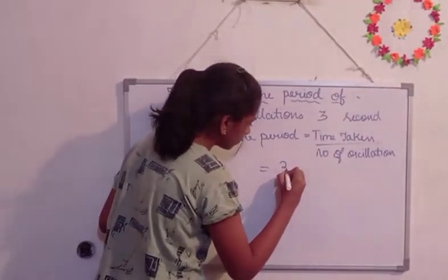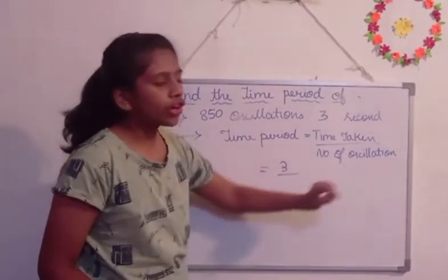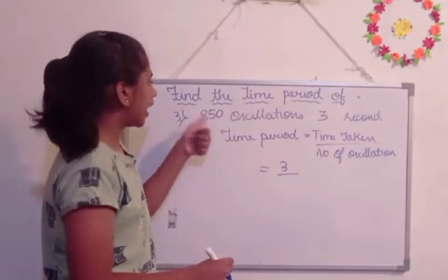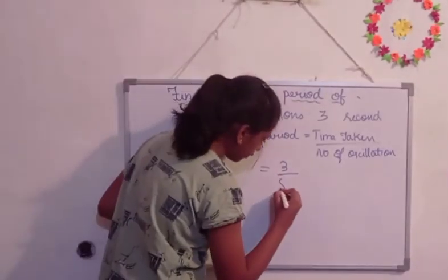So, 3 divided by the number of oscillations completed, which is 850 oscillations. So, 850.